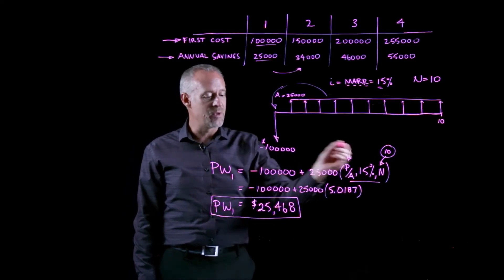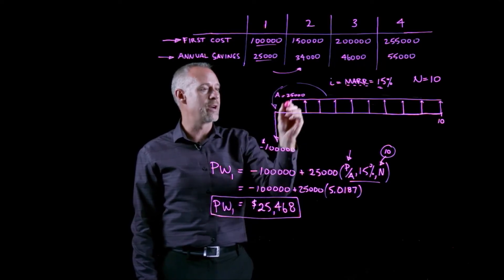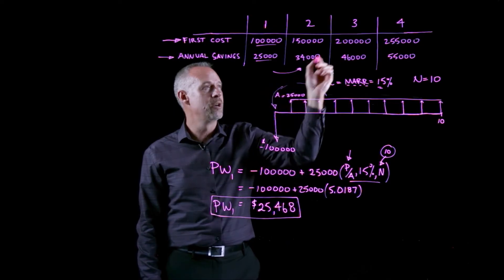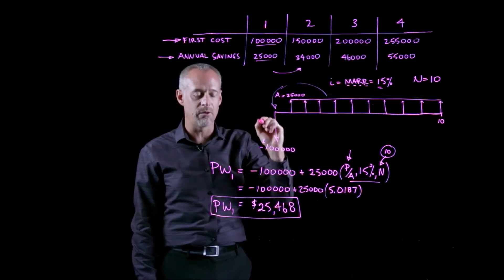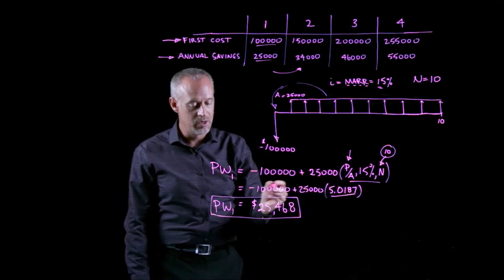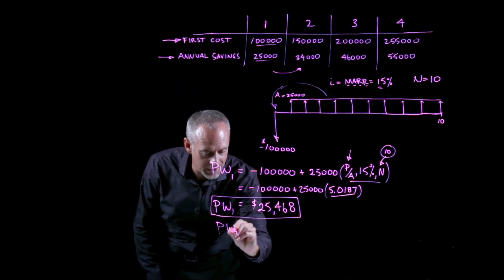I can do exactly the same calculation for each of the other alternatives. So instead of 100,000 and 25,000, I could do 150 and 34, 246, etc. The time value of money factor would actually be the same. So I won't bother doing all of them, but I'll just write down what the answers are.